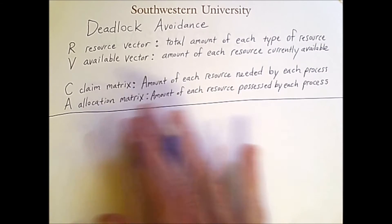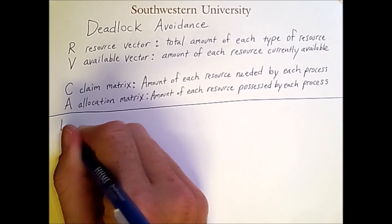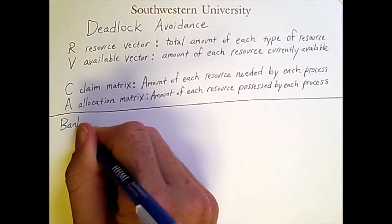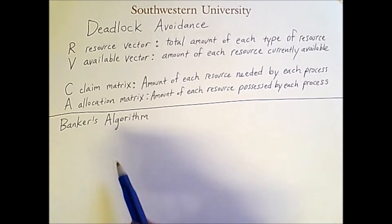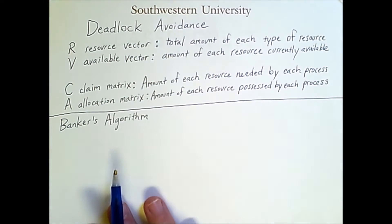If we have all of this information, then we can apply an algorithm called the banker's algorithm in order to determine if it's possible to run all of our processes to completion without deadlock occurring, and if so, what order we should run them in. To demonstrate this, I'll write out an example of values for each of these variables.